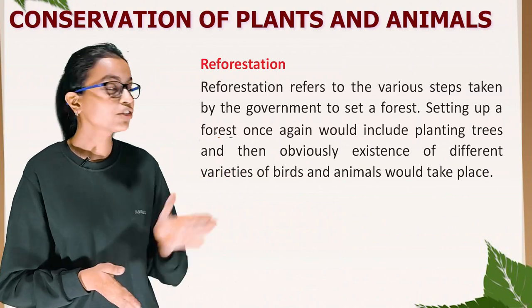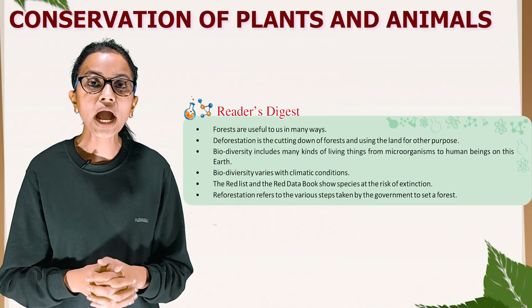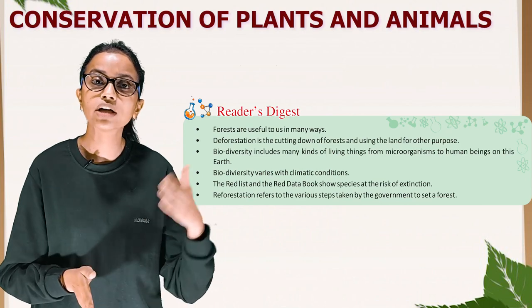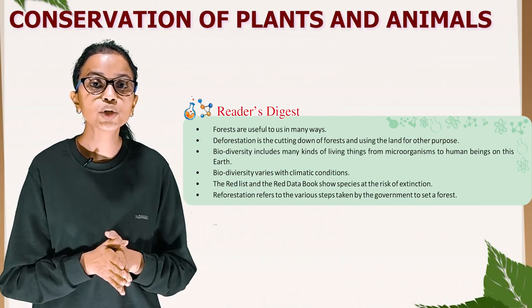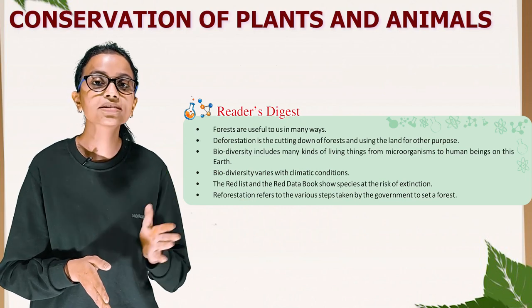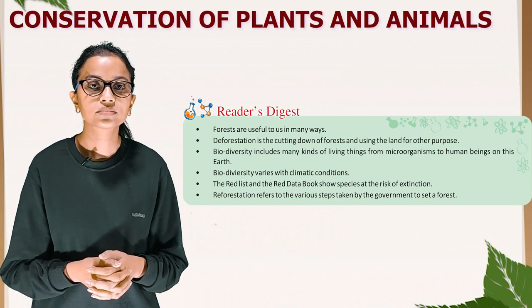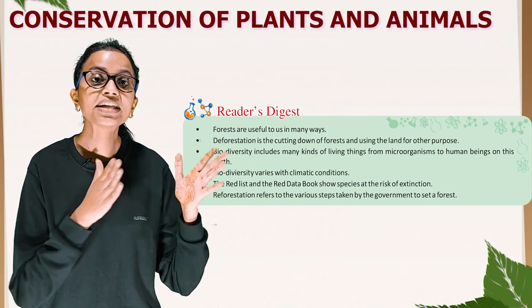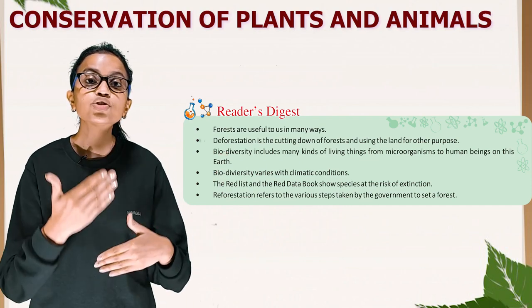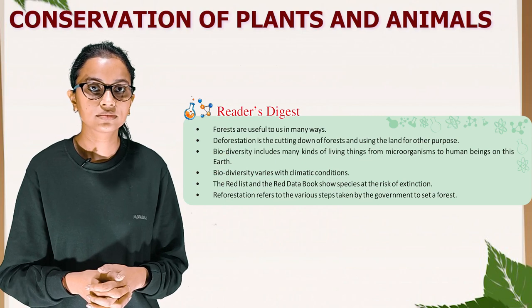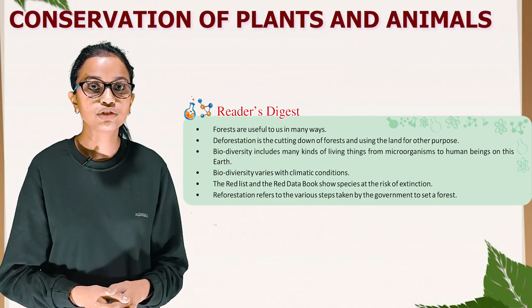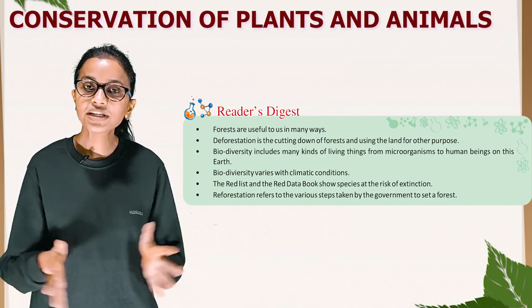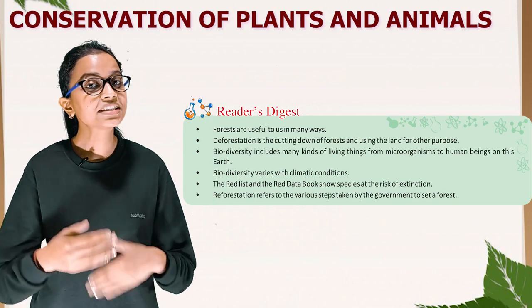Summary: forests are useful to us in many ways. Deforestation is the cutting down of forest and using the land for other purposes. Biodiversity includes many kinds of living things from microorganisms to human beings on this earth. Biodiversity varies with climatic conditions. The red list and the red data book show species at the risk of extinction. Reforestation refers to the various steps taken by the government to re-establish a forest. That's all for today — we'll meet in the next class. Bye!